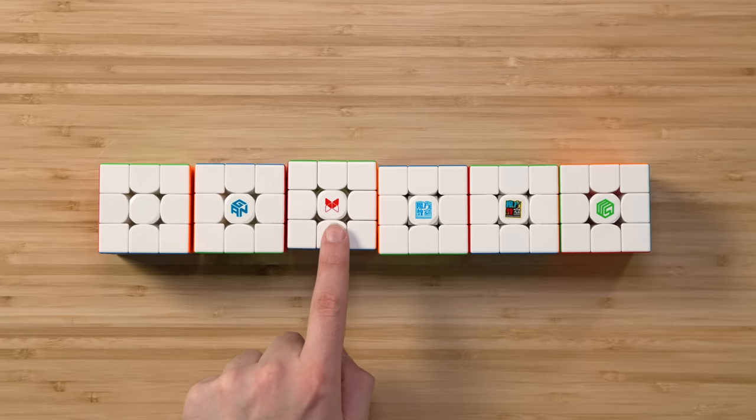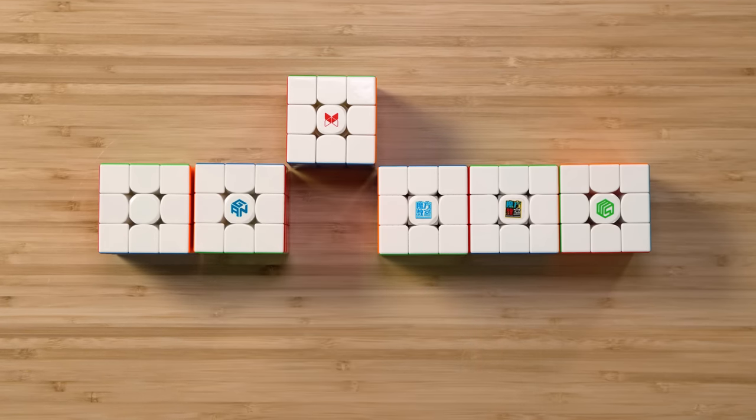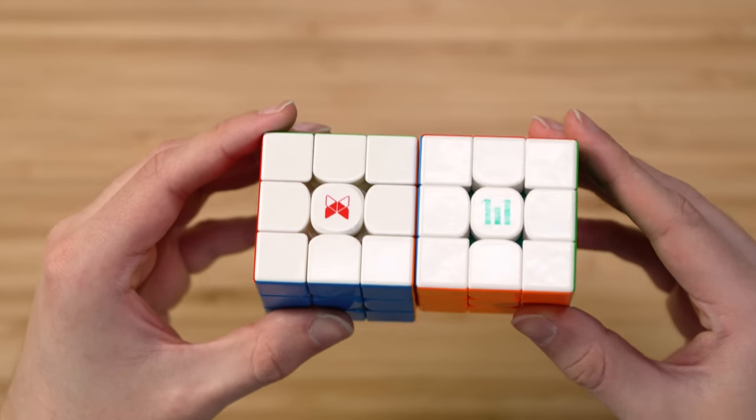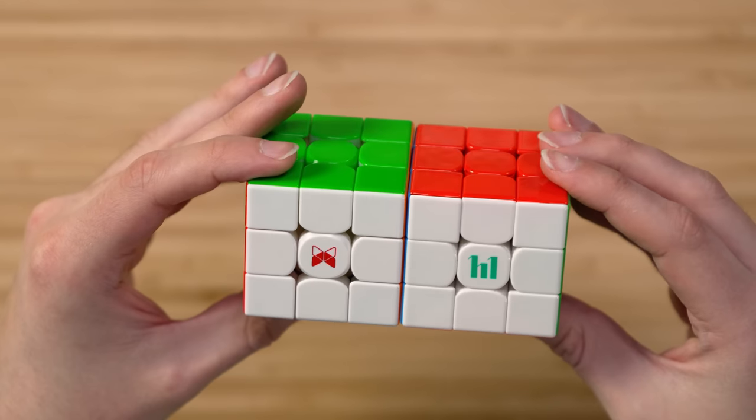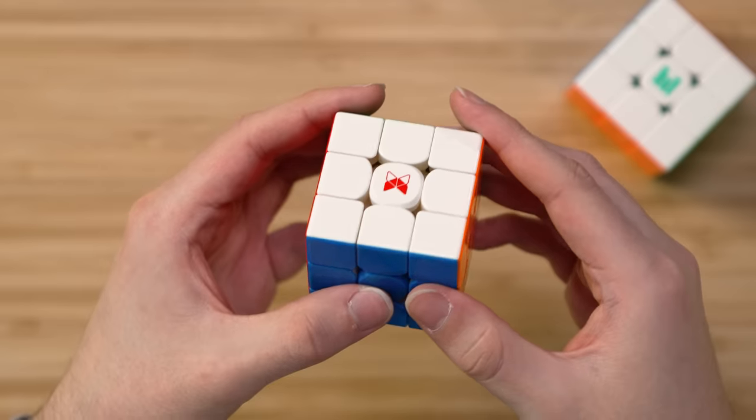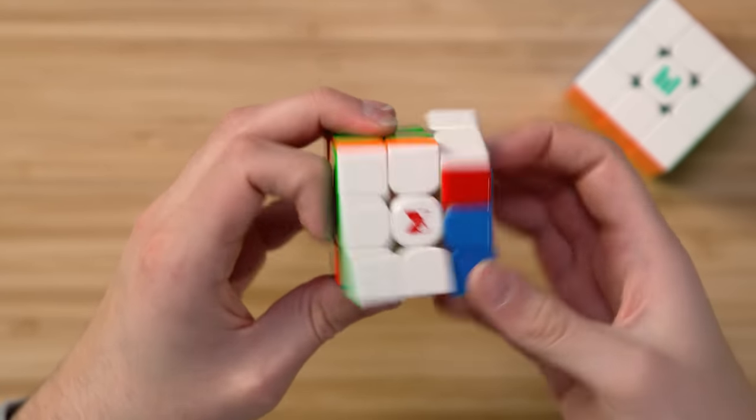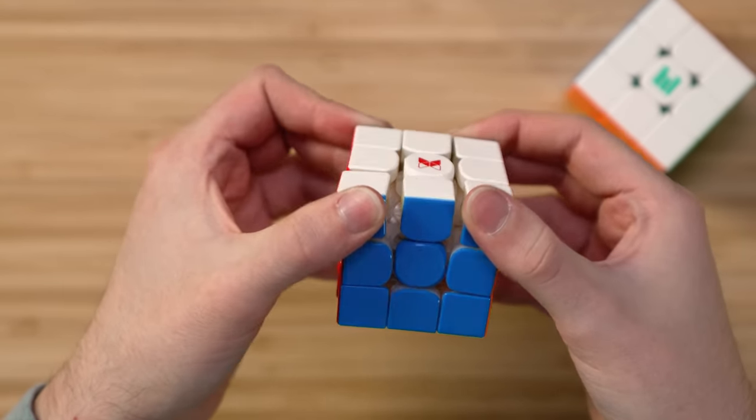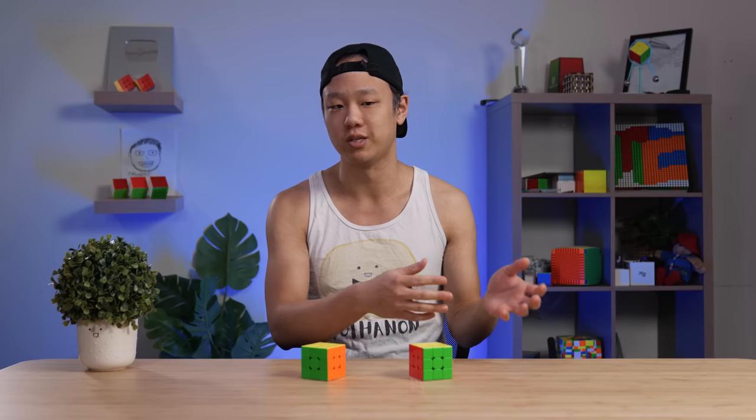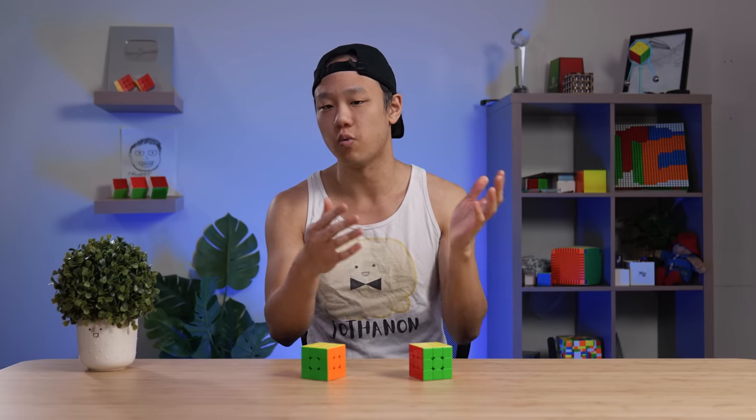Next up is the Tornado V3. This is a really common sought-after comparison. How does Moyu's flagship stack up against QiYi's flagship? I think this is a very hard comparison because both cubes are very good. One example of a person that's used this cube and the Tornado V3 in a very short amount of time together is Max Park. He was originally using the Tornado V3, but for his latest average, he used the YS3M. So people do switch from the Tornado to the YS3M and vice versa.